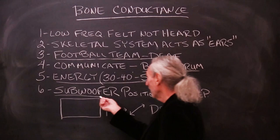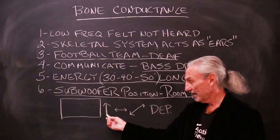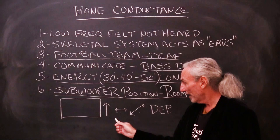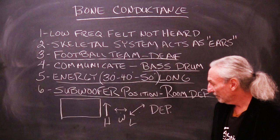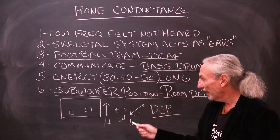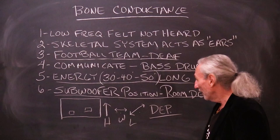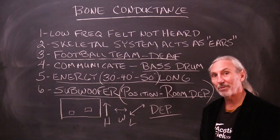Here's another thing we have to realize: the subwoofer position inside the room is dependent upon the height, the width, and the length of the room. We have to take all of these variables into consideration because the position of the subwoofer in the room is going to be dependent on all of those variables. We have to take our room ratios into consideration and then find the correct position in the room, marrying the subwoofer to the room to get the best sound.